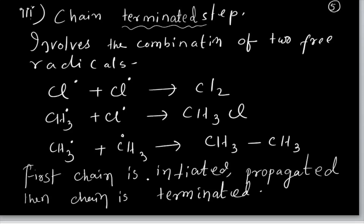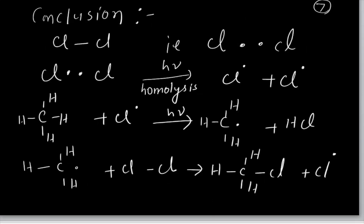Are you clear? First, the chain is initiated by giving the chlorine molecule under light photon, undergoing homolysis, and it produces chlorine free radical. Chlorine free radical combined gives CH3 free radical. And so this reaction is going on until you get the stable product. When you want to stop the reaction, at that time free radicals combine and give the main product, and the reaction stops.